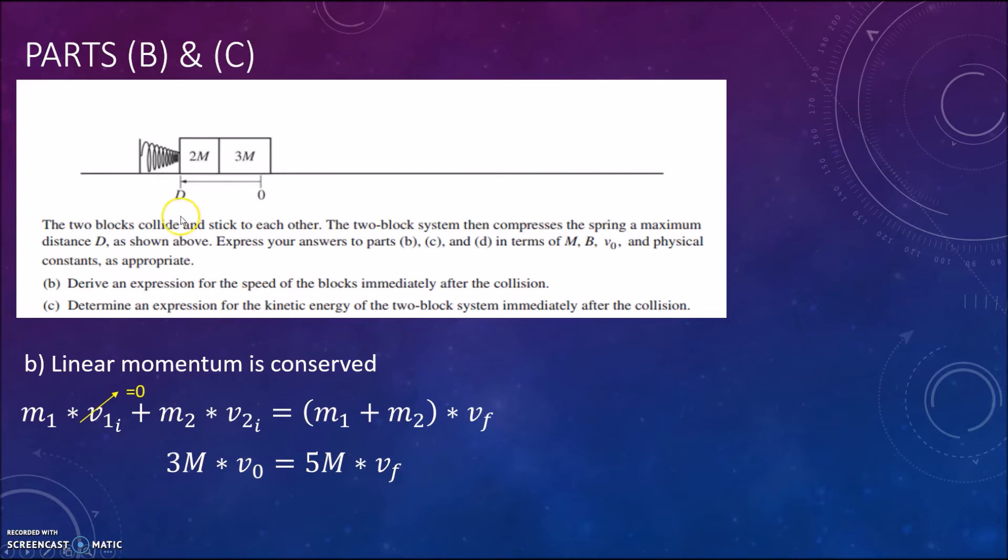We get 5m from adding up the masses and on the left side of the equation right here the momentum of the first block basically equates to zero just because it wasn't moving. So its initial velocity was zero. So cancelling out the capital M gives us a final answer of 3 times initial velocity all over 5. So this should get you the points for part b.